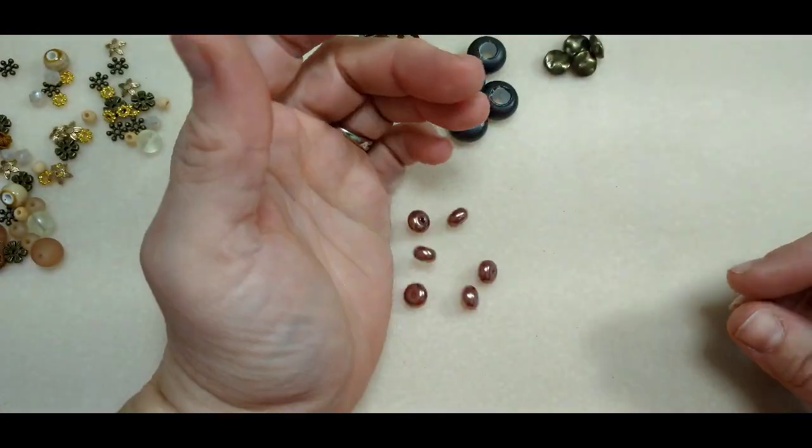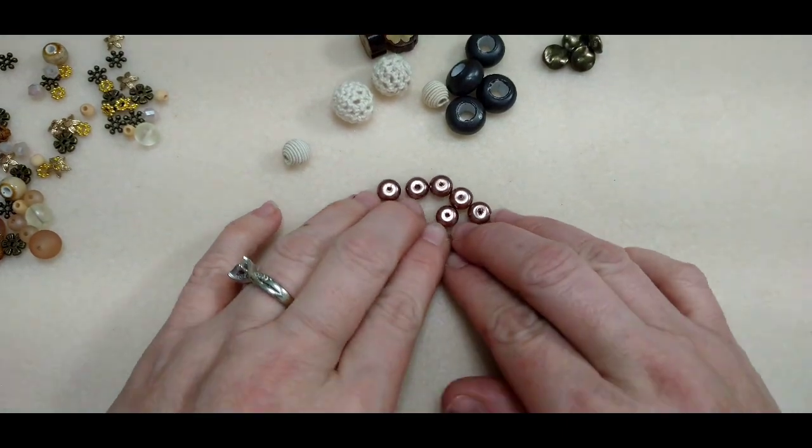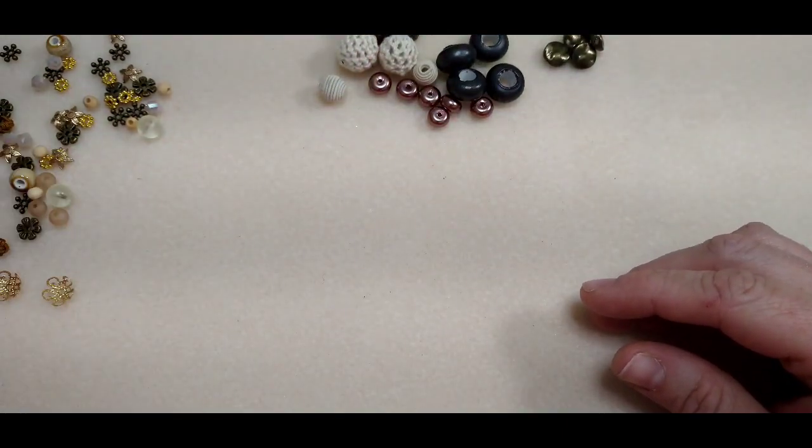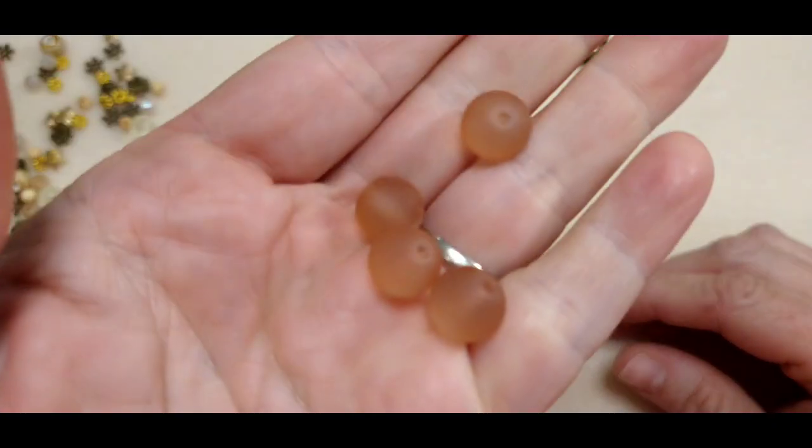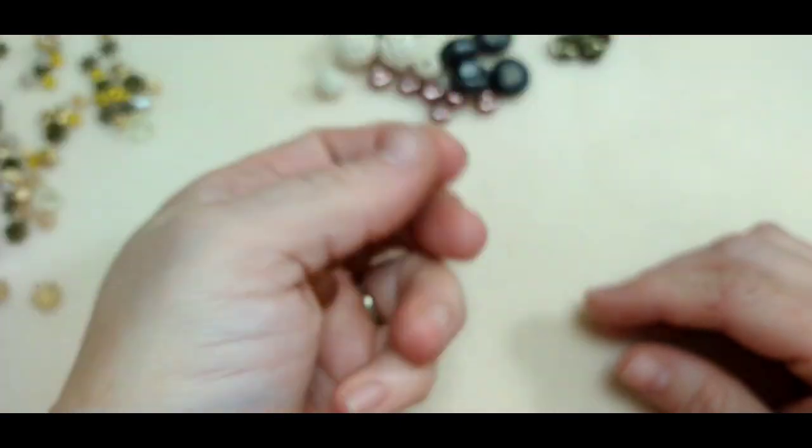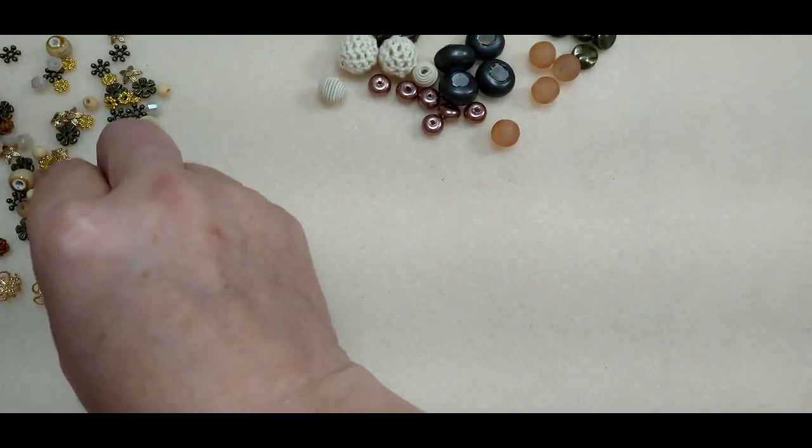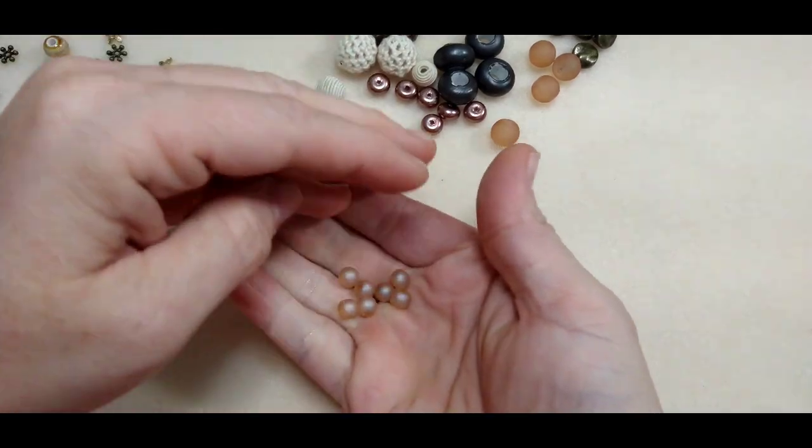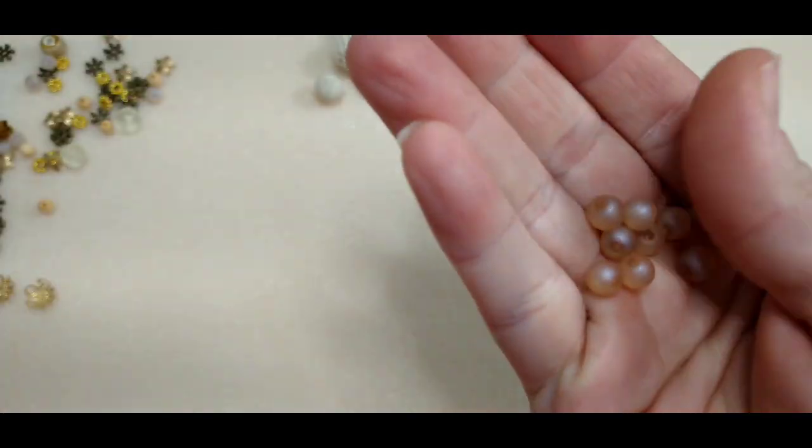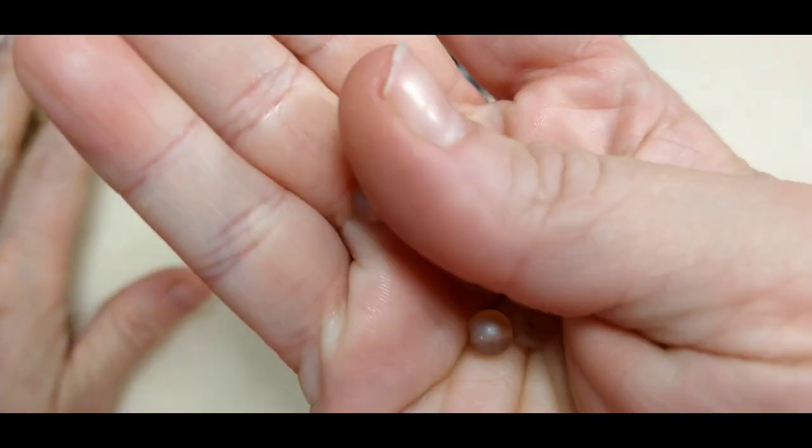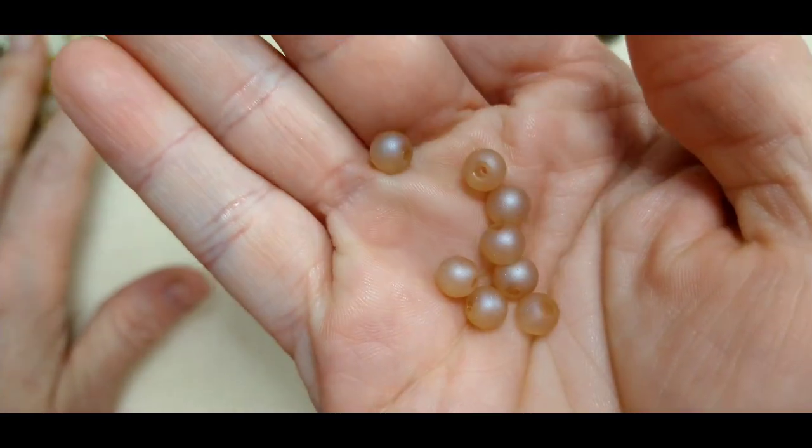And then we have some frosted glass in a kind of a brownish shade. We have smaller frosted glass, looks like little 6mm ones, and these have a really pretty finish on them too, kind of like a not really an AB or galaxy, I don't know. It's a really pretty finish, a luster maybe.